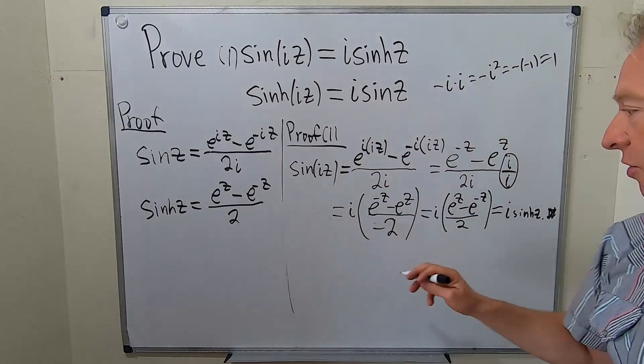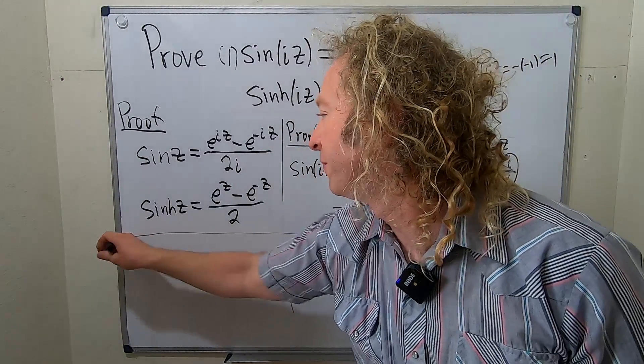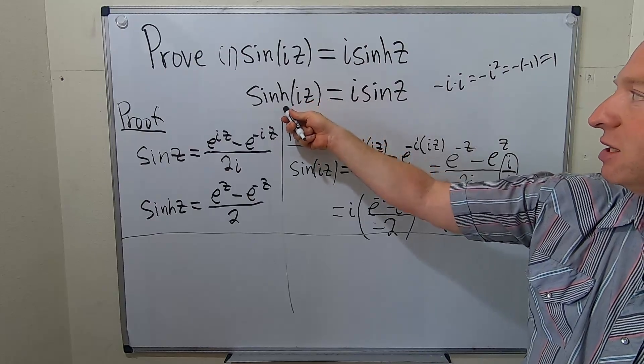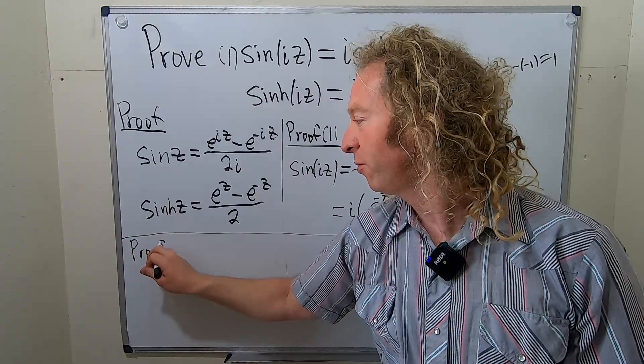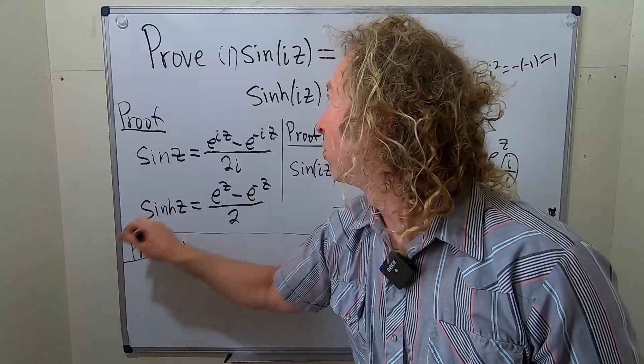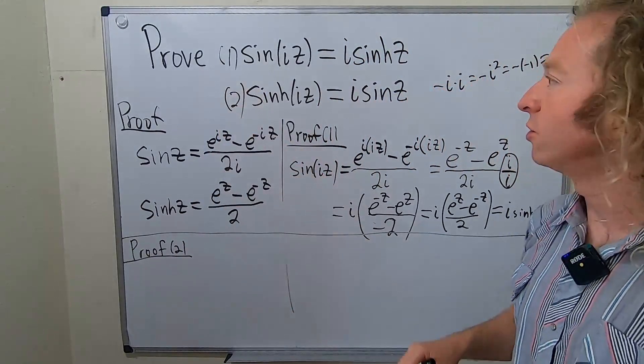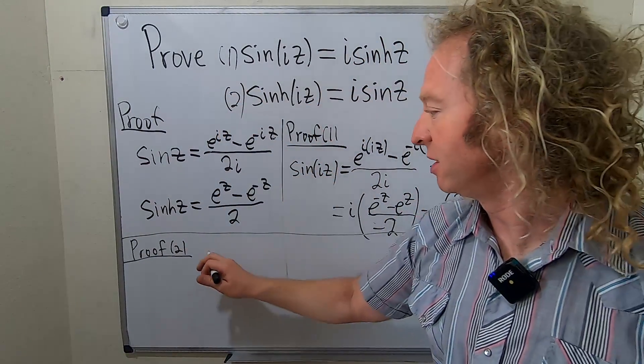Let's go ahead and do the other one. I think I'm going to, I think I can squeeze it in down here. So we have to prove that sinh iz is equal to i sin z. So proof, proof of two. We'll call this two.